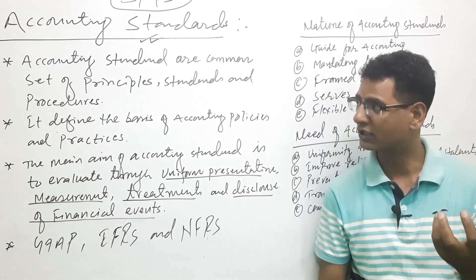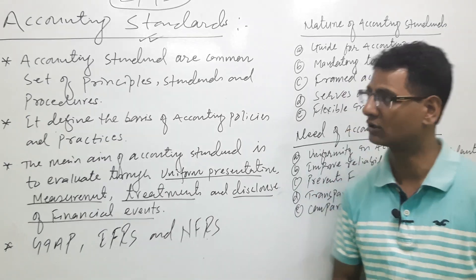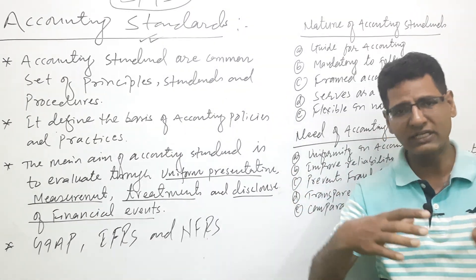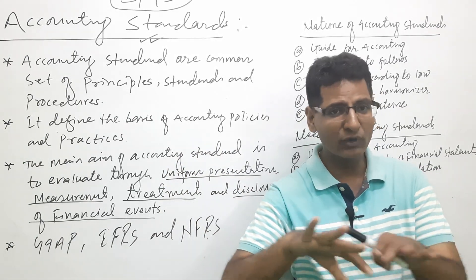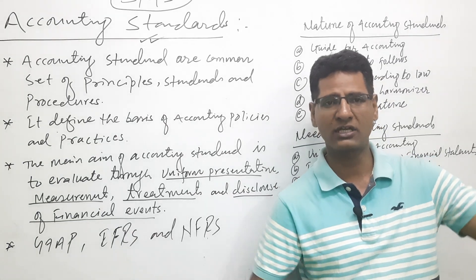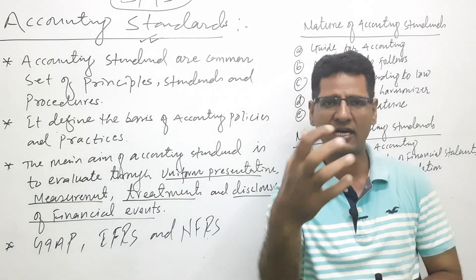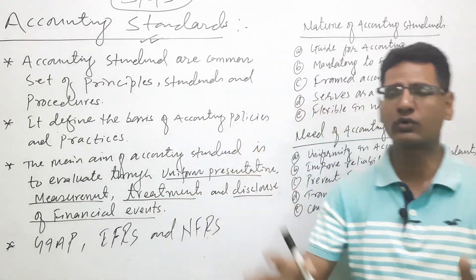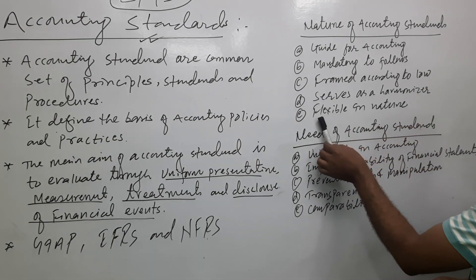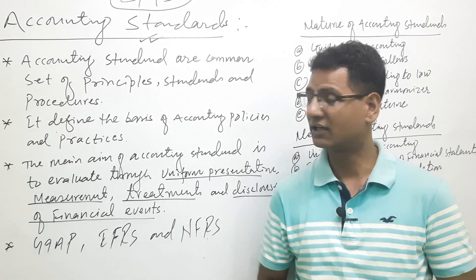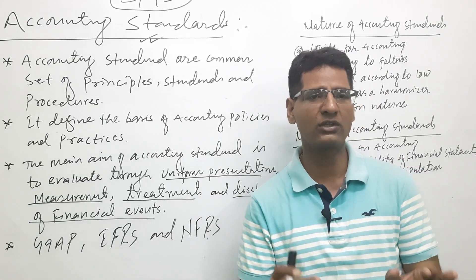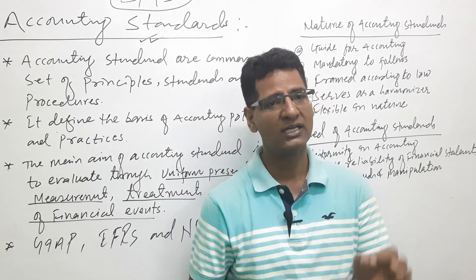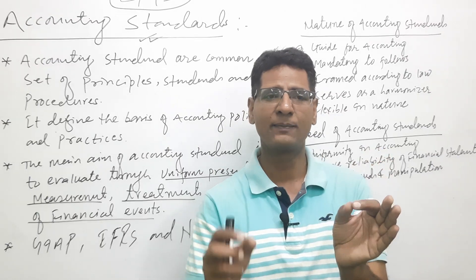Accounting standards define the accounting policy, accounting rules, and format. This format must be followed by the accounting system. They also serve as a harmonizer — harmonizing different accounting systems and accounting data. Accounting standards are also flexible in nature. On the basis of time, on the basis of need, on the basis of demand, they can change. So they are not exactly fixed; they can be revised.